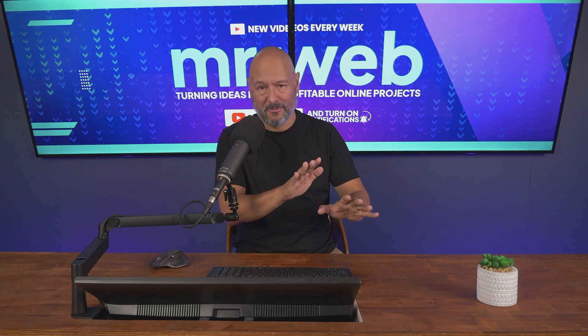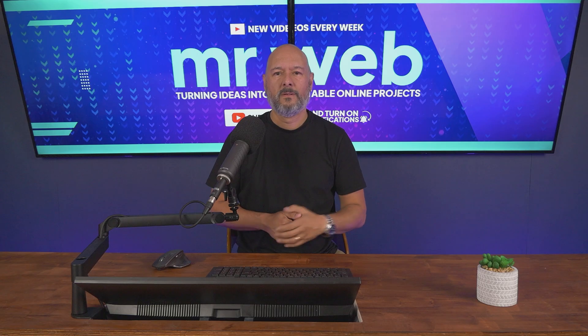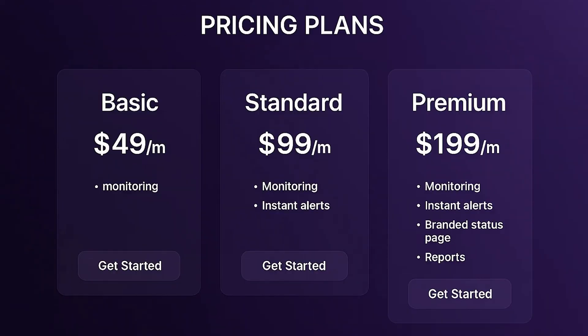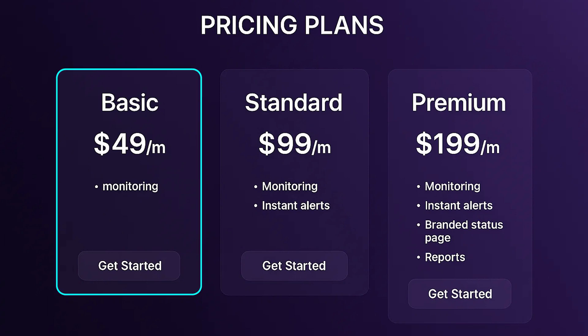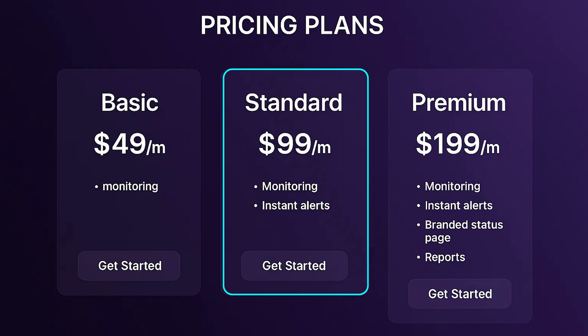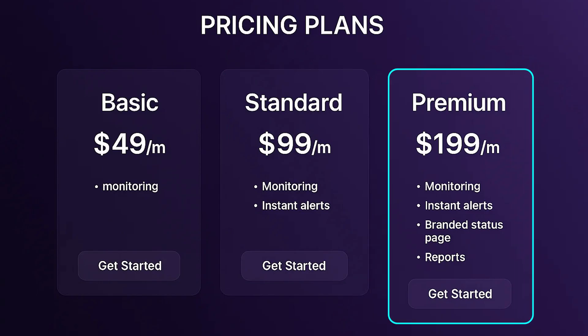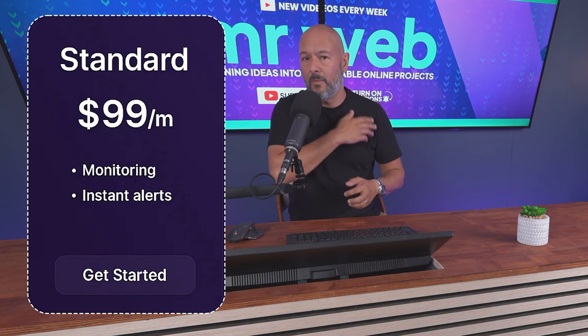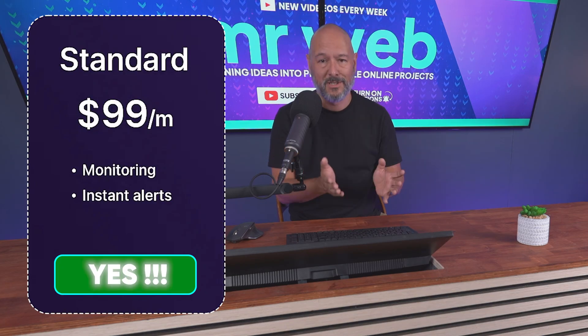When it comes to pricing, keep it simple — offer three different plans. A basic plan at $49 per month for simple monitoring. A standard plan at $99 per month for monitoring and instant alerts. And a premium plan at $199 per month that includes monitoring, instant alerts, a branded status page, and complete reporting. The sweet spot is obviously the $99 per month plan. For most businesses turning thousands online, that's an easy yes.